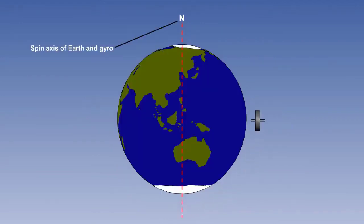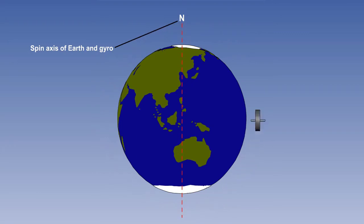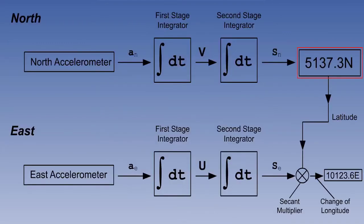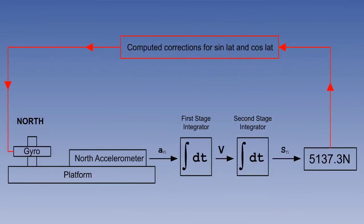Corrections for earth rate, based on the sine and cosine of the latitude, therefore need to be computed and passed back to the platform in order to keep it level as the earth rotates. Fortunately, latitude is being constantly updated in the north channel. All we have to do is constantly feed the latitude to a computer which continuously calculates 15 degrees times sine latitude and 15 degrees times cosine latitude per hour, and pass it to the appropriate channel of the platform.